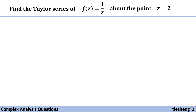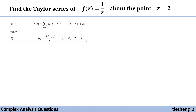This question is to find the Taylor series of the function f(z) = 1/z about the point z₀ = 2. From the textbook, we already know the form of the Taylor series, which is the sum from n=0 to infinity of a_n times (z minus z₀) to the power of n. We also know the equation for a_n, which is the nth derivative of f(z₀) over n factorial.